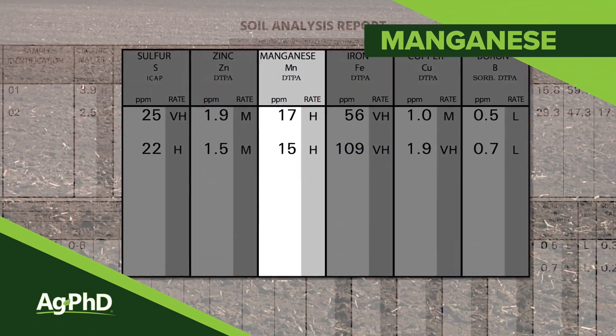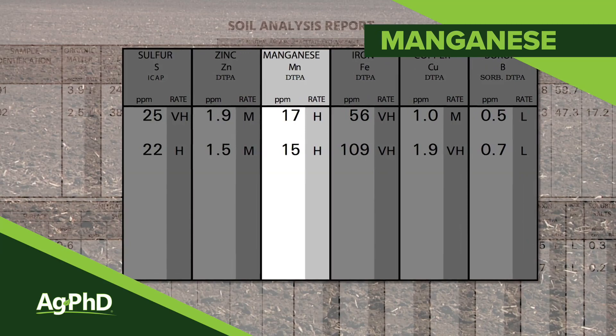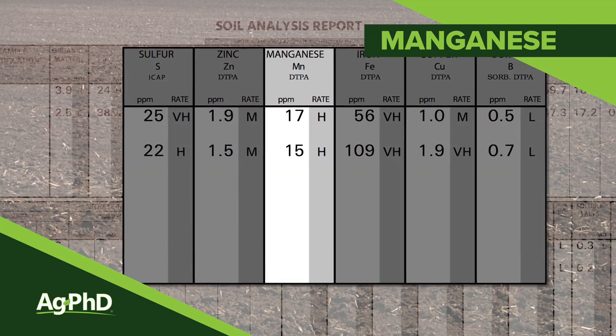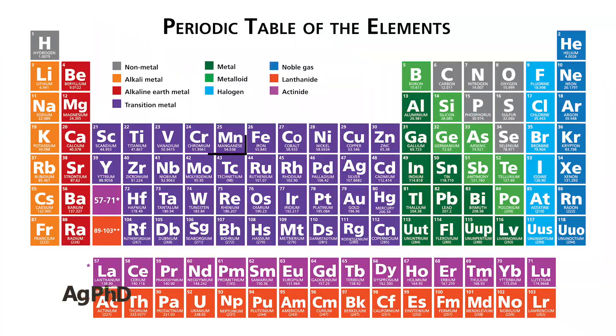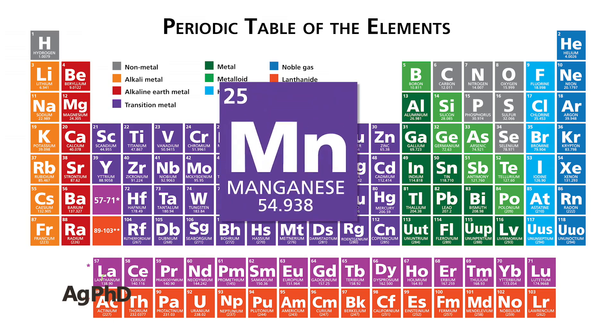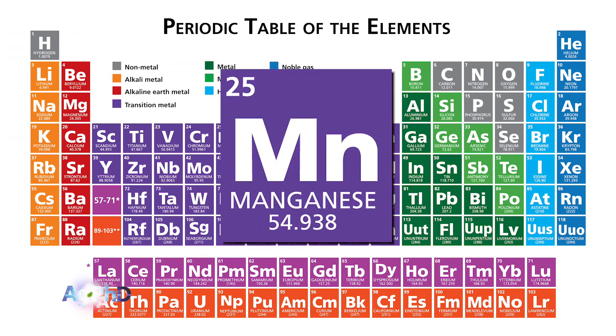Our next topic is manganese. Now, we're not talking magnesium, the secondary nutrient — we're talking about manganese, the micronutrient, or MN as the elemental symbol.